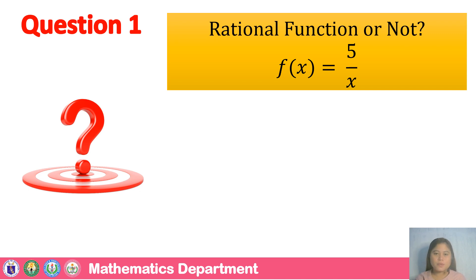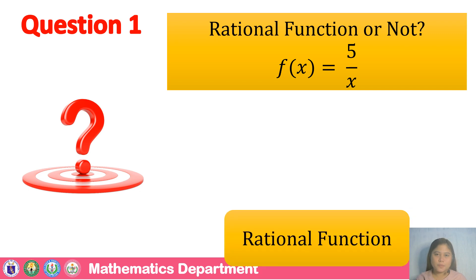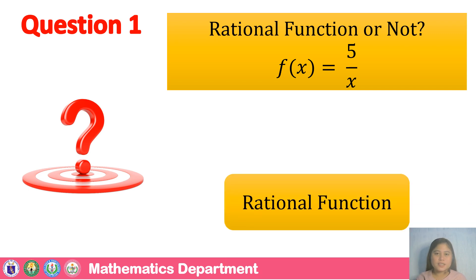Question number 1: F of x is equal to 5 over x. Rational function or not? That is a rational function because both numerator and denominator are polynomials and the denominator is not equal to zero.